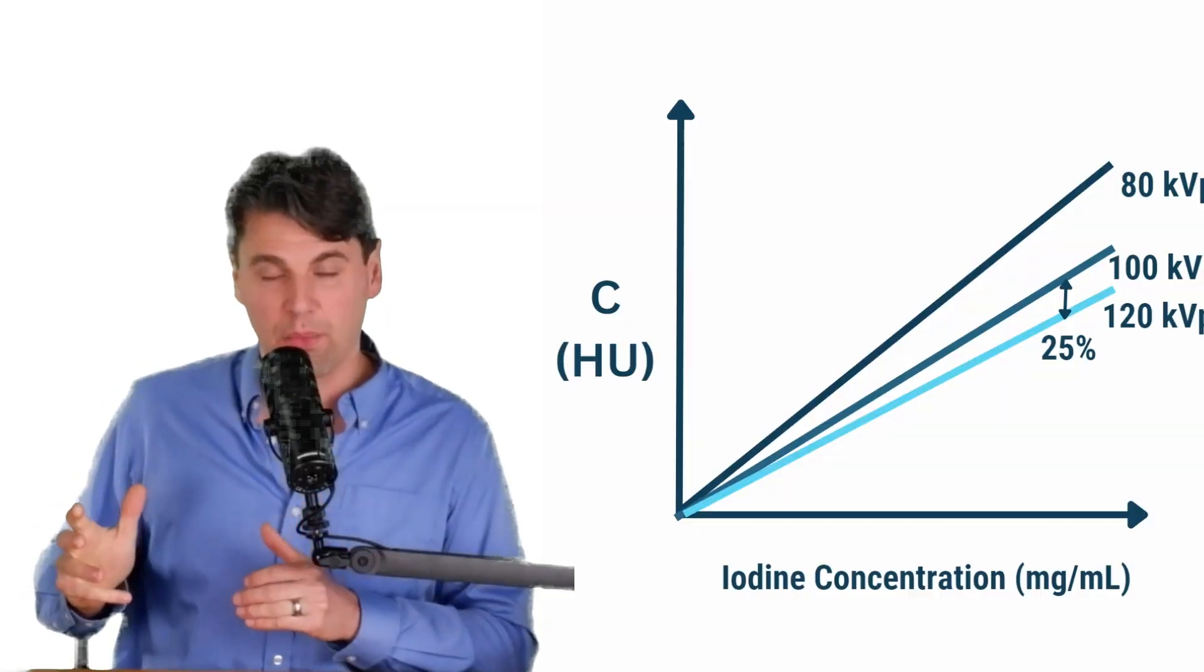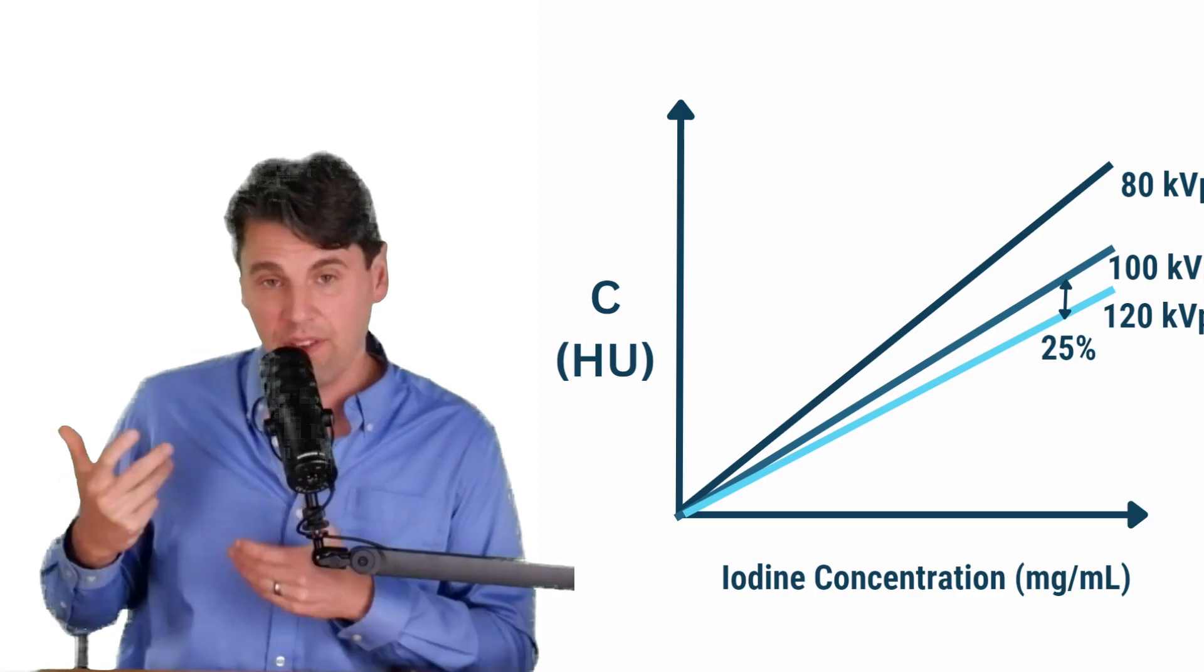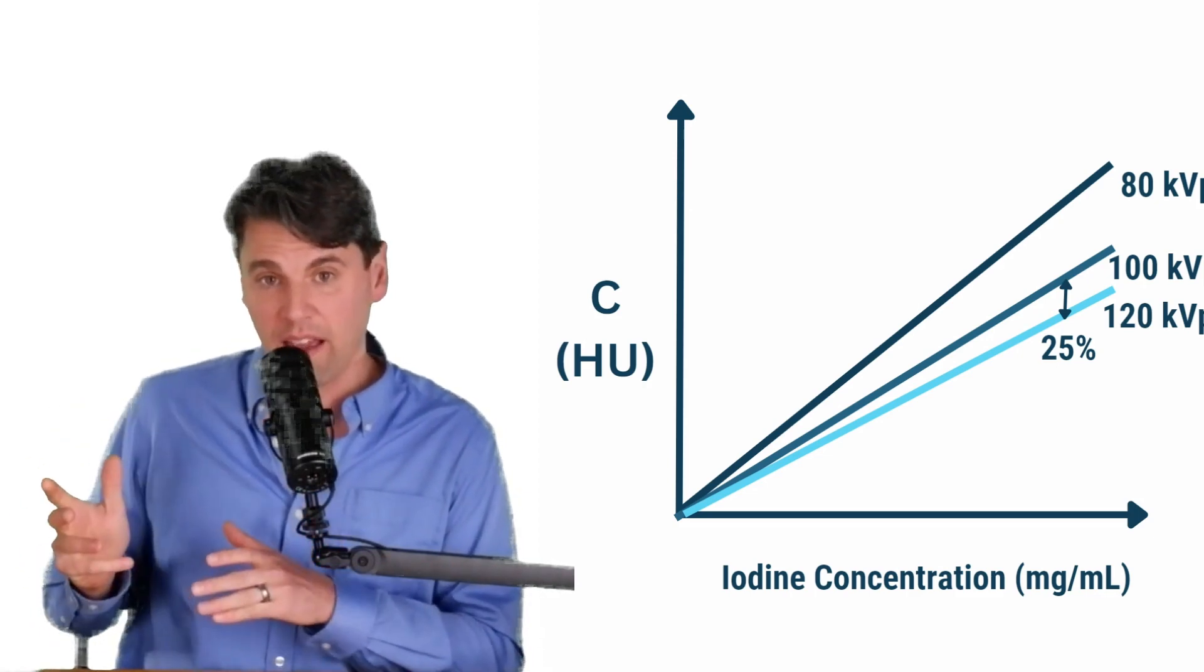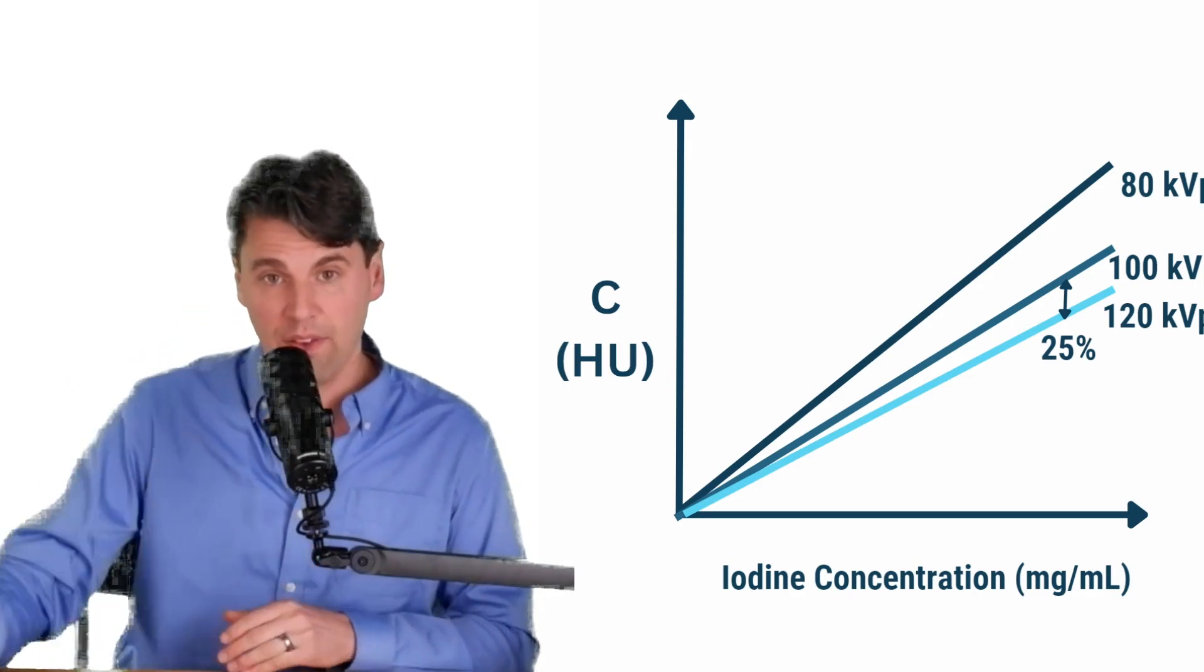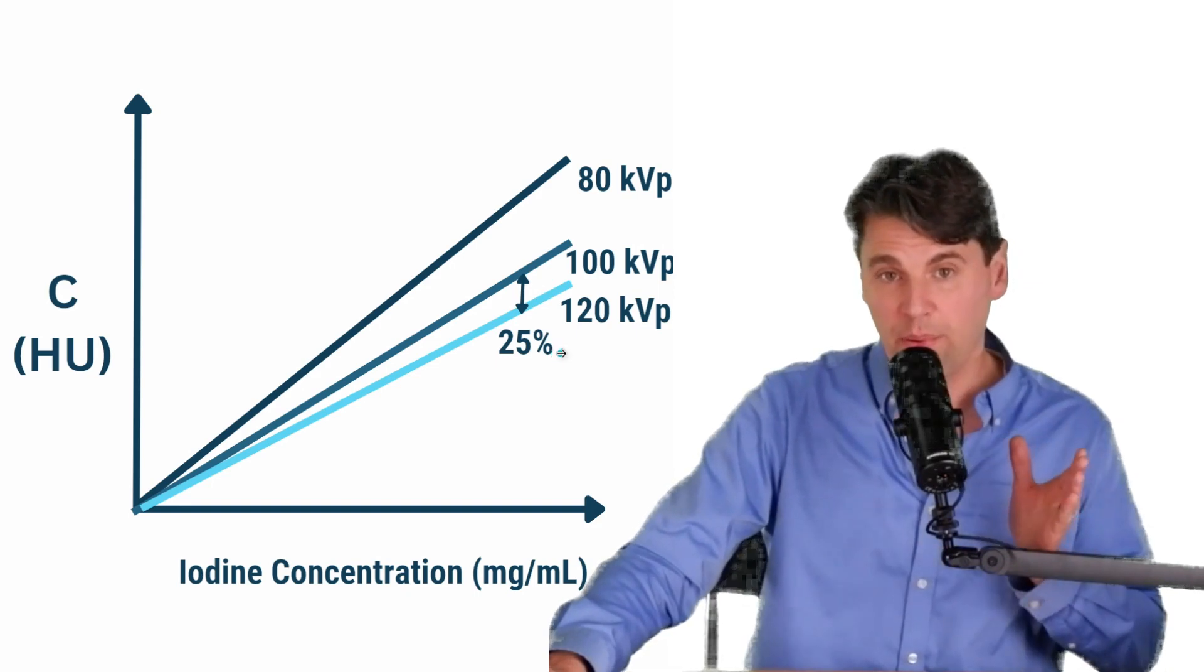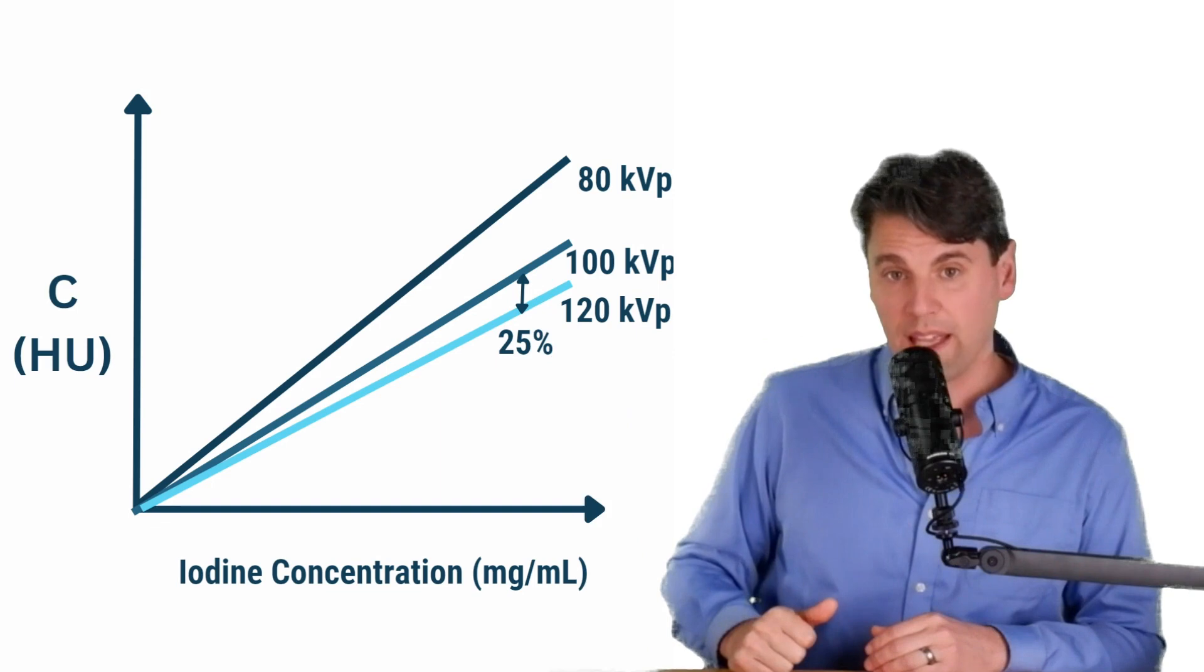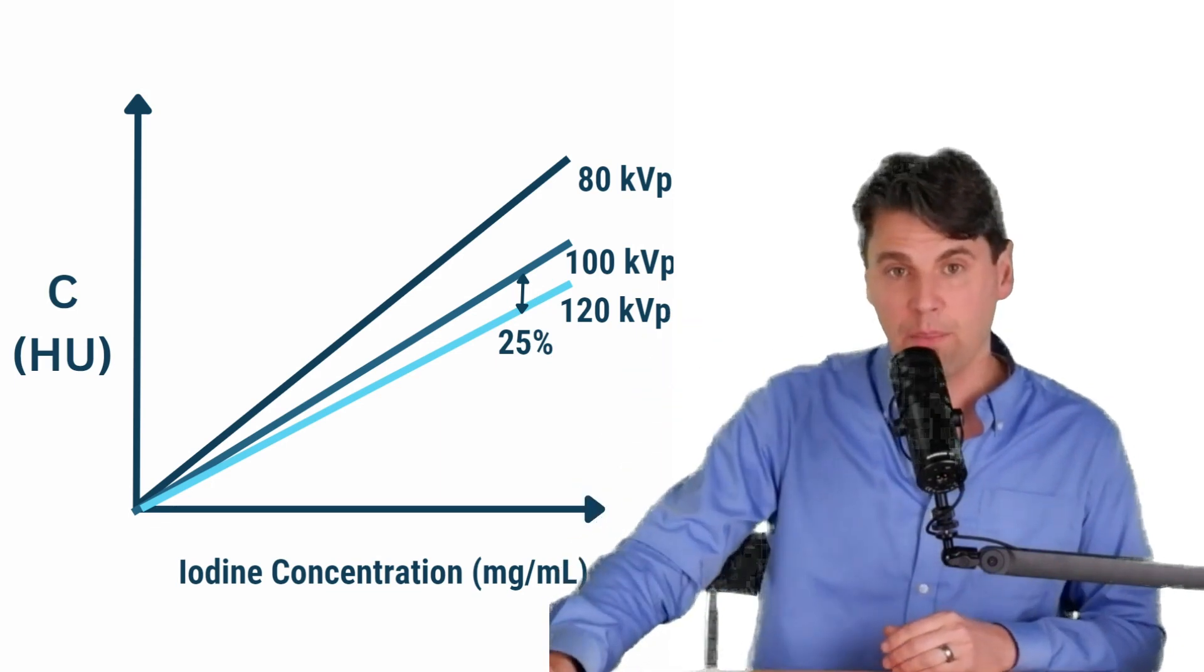As far as the contrast term, we've talked a lot before in our previous videos on the KVP relationship, especially for a photoelectric contrast, how there's really a steep increase for the lower KVPs. So you can get more contrast going to those lower KVPs. It's usually around 25% more contrast, and making a jump of 20 KVP to a lower KVP, you're going to be getting significantly more contrast.